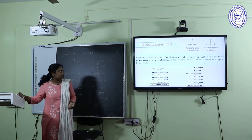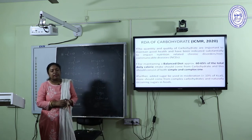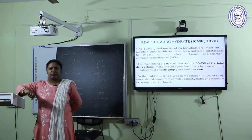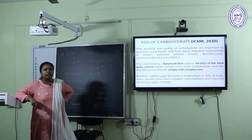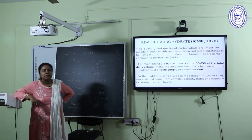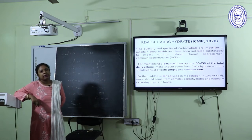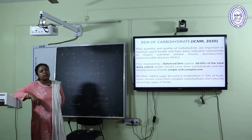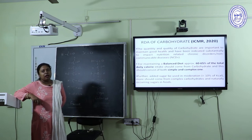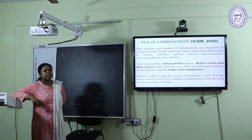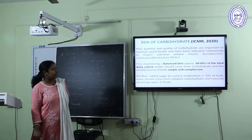Let's move to the RDA, or recommended dietary allowances. As per ICMR 2020, our carbohydrate intake should always be 60 to 65% of the total calorie intake in our regular diet.